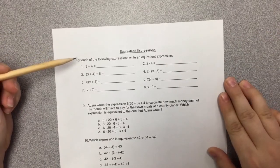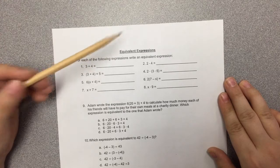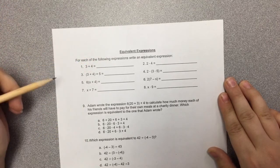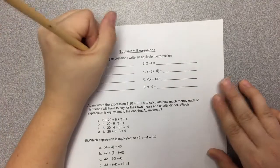So let's go ahead and I'm gonna do at least one from every section. For each of the following expressions, write an equivalent expression. With 3 plus 4, an easy one for that could be just 4 plus 3.